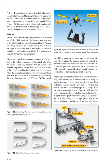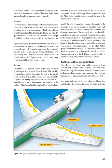Simple light aircraft usually do not have hydraulic or electric fly-by-wire aileron control — these are found on heavy and high-performance aircraft. Large aircraft and some high-performance aircraft may also have a second set of ailerons located inboard on the trailing edge of the wings, as part of a complex system of primary and secondary control surfaces for lateral control and stability. At low speeds, the ailerons may be augmented by the use of flaps and spoilers. At high speeds, only inboard aileron deflection is required to roll the aircraft while the other control surfaces are locked out or remain stationary.